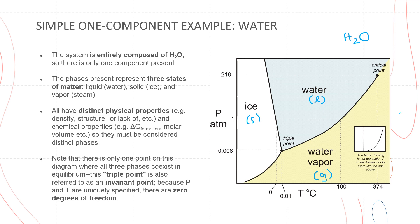Note that there is only one point on this diagram where all three phases coexist in equilibrium. Because the pressure and temperature are uniquely specified, it is only at this point that all three phases coexist in equilibrium — so there are zero degrees of freedom. That is your invariant point.